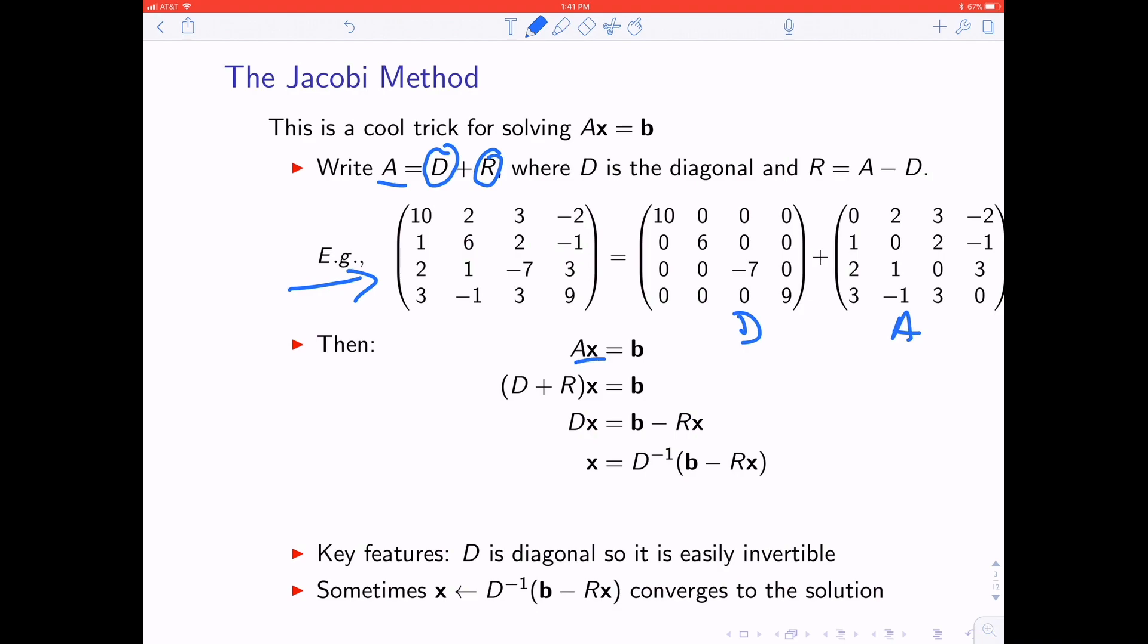The equation AX equals B is the same as D plus RX equals B. Now we're going to move this bit over to the right-hand side. So DX equals B minus RX, and therefore X equals D inverse times B minus RX. Now you'll notice that X appears on both sides.